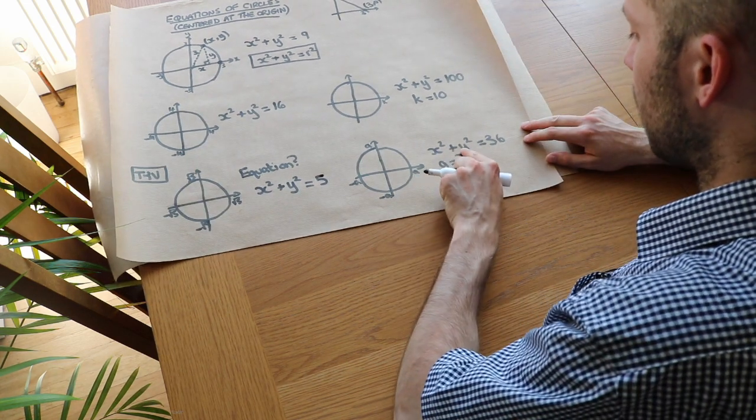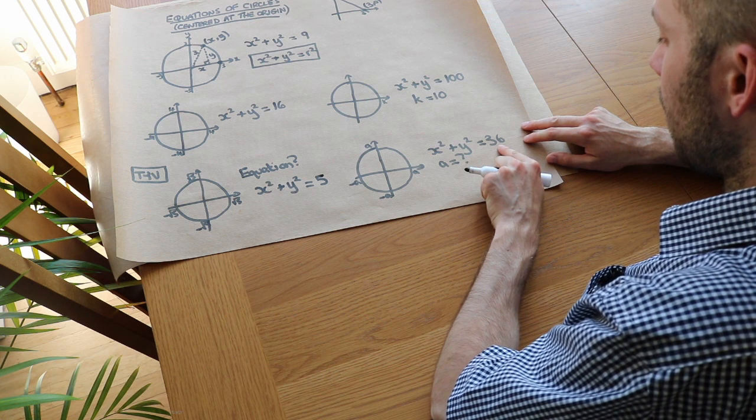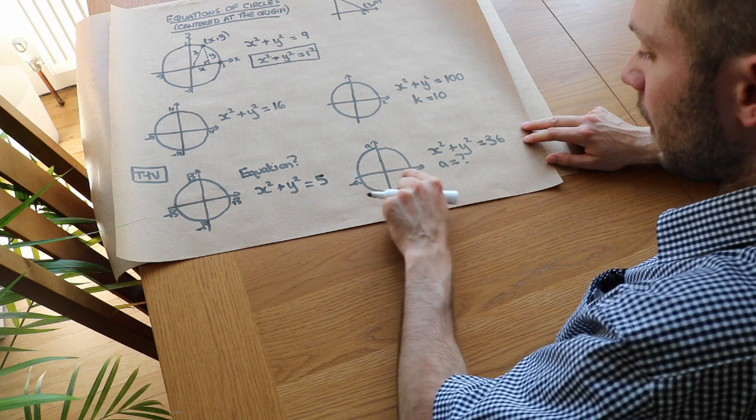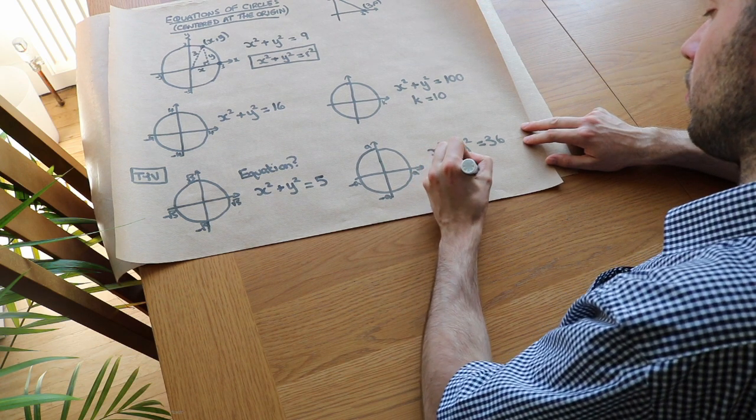And the second one, if x squared plus y squared equals r squared, r squared is 36. And therefore the radius is 6. And a is the radius. So in this case, a is equal to 6.